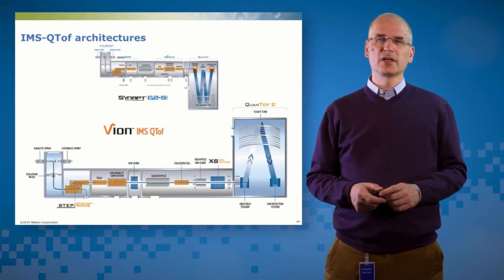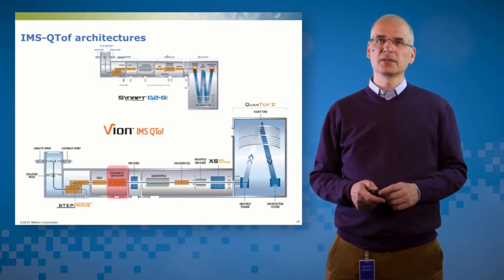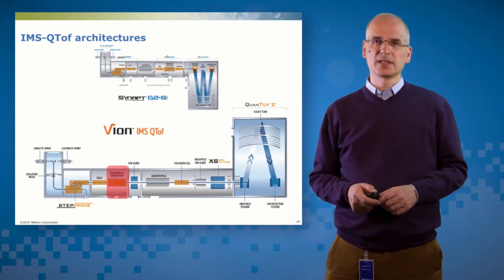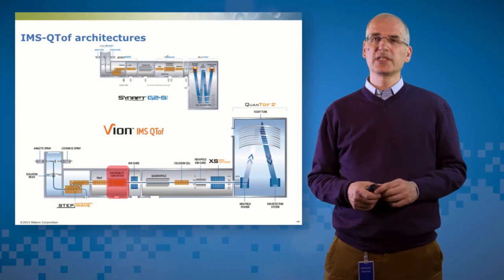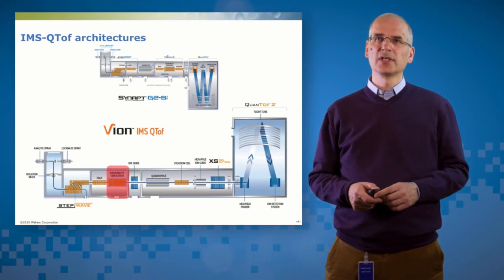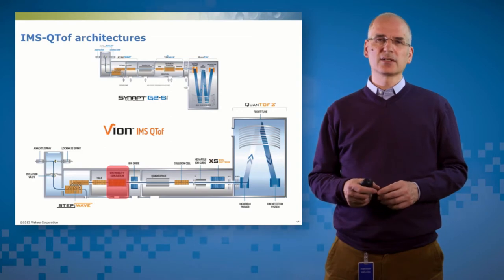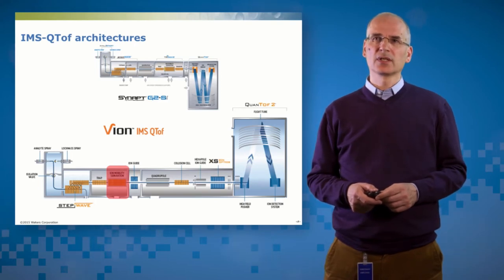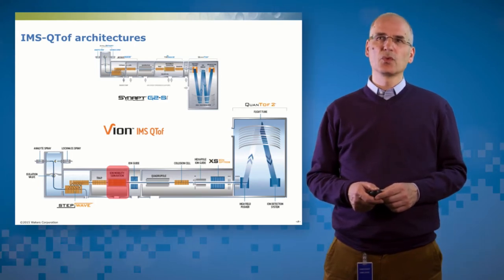And what we introduced at ASMS this year was the Vion family. So it's an evolution of the architecture of Synapt, but it differs in one particular way. And that's the ion mobility device is now up front. So ion mobility separation occurs before the quadrupole, before the collision cell. And that allows us to do a variety of different things. That architecture enables different quantitation modes, different qualitative analysis modes as well.